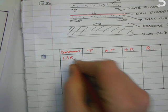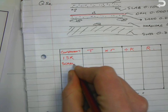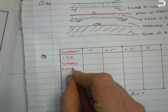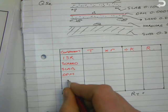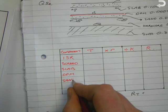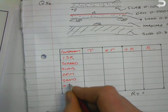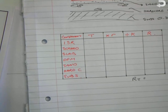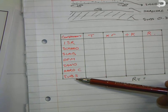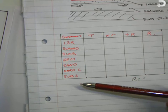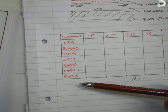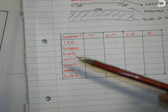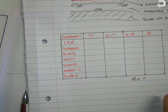We work from the inside all the way out, so our components are: ISR, screed, slab, DPM, sand, hardcore, and subsoil. In this question we do not have any ESR — external surface resistance. Since we are dealing with a floor and calculating for 300mm of subsoil, the assumption is that heat won't travel down any further, so there is no ESR in this question.